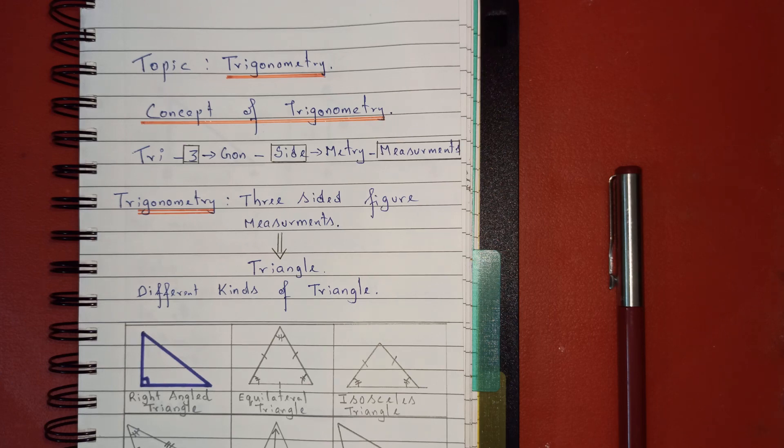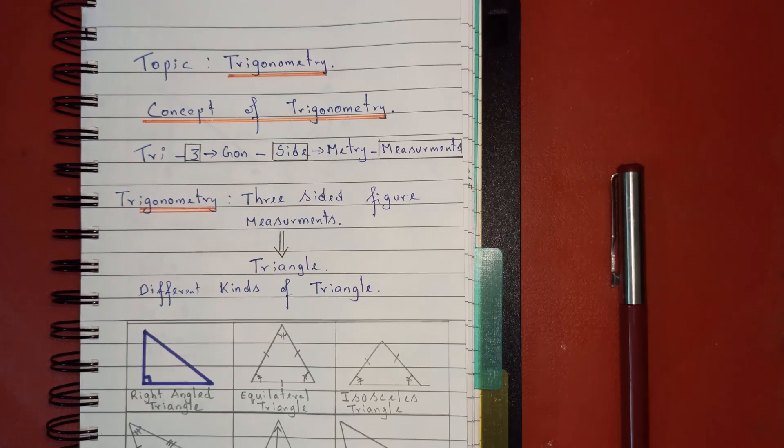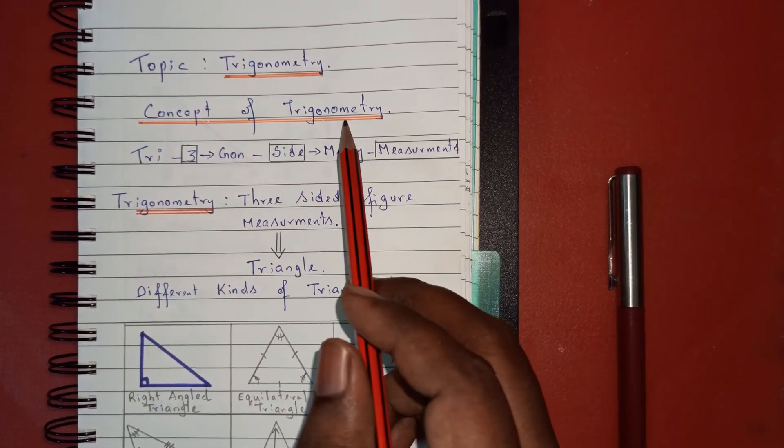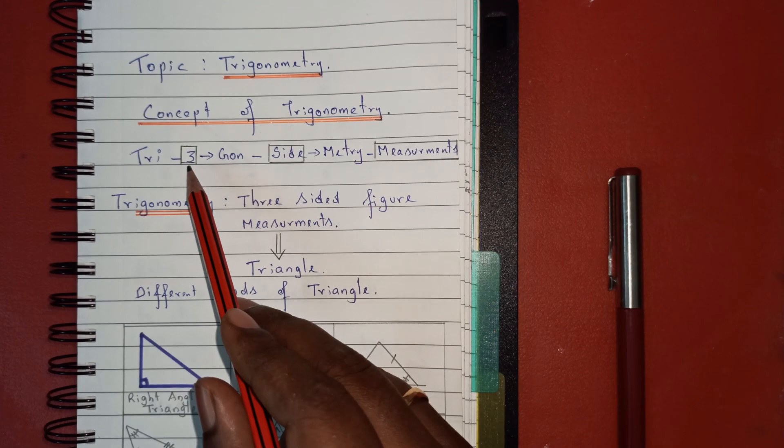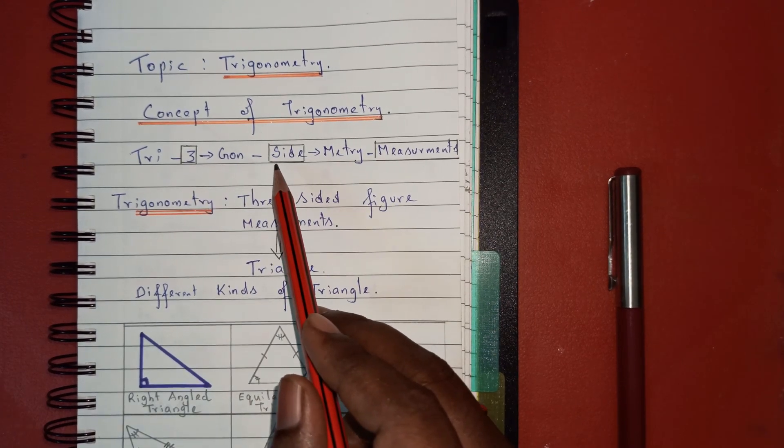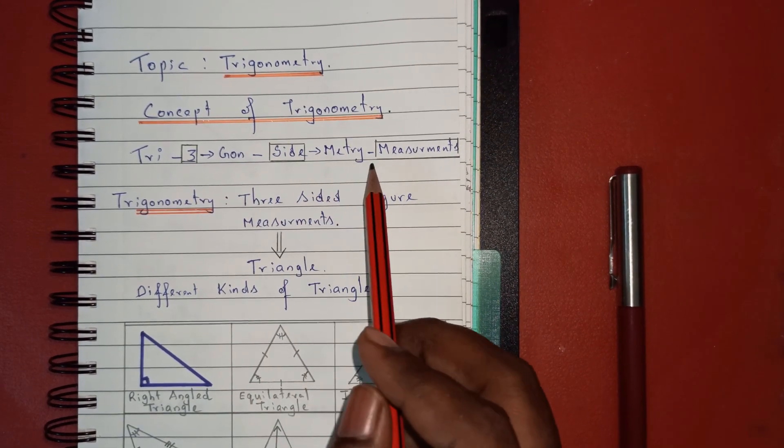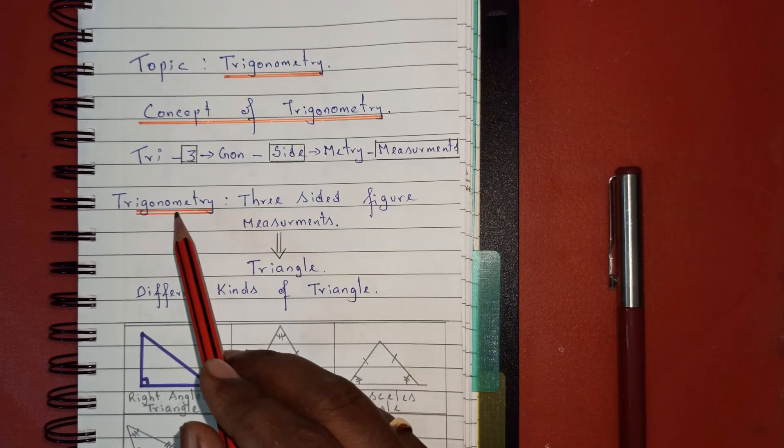As the name suggests, tri stands for three, gono stands for sides or shapes, and metri stands for measurements. So trigonometry is about three-sided figure measurements.